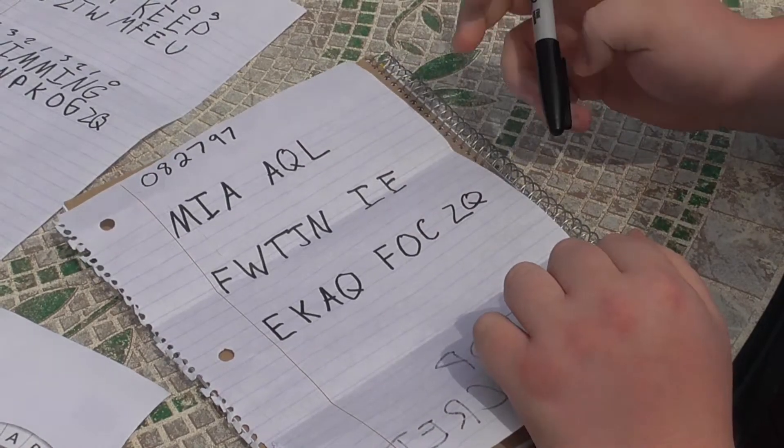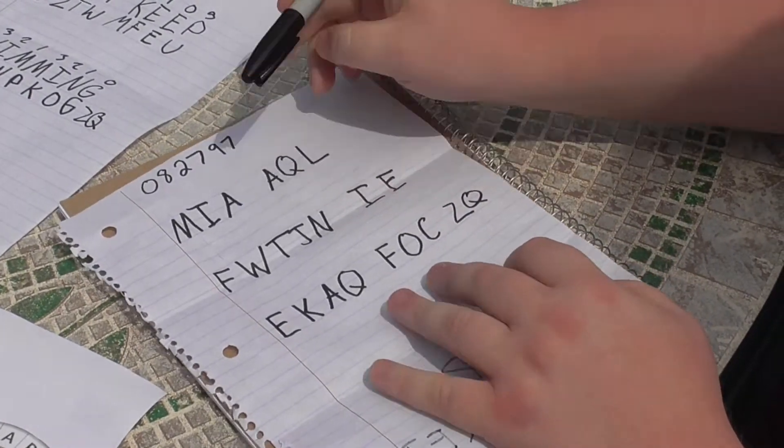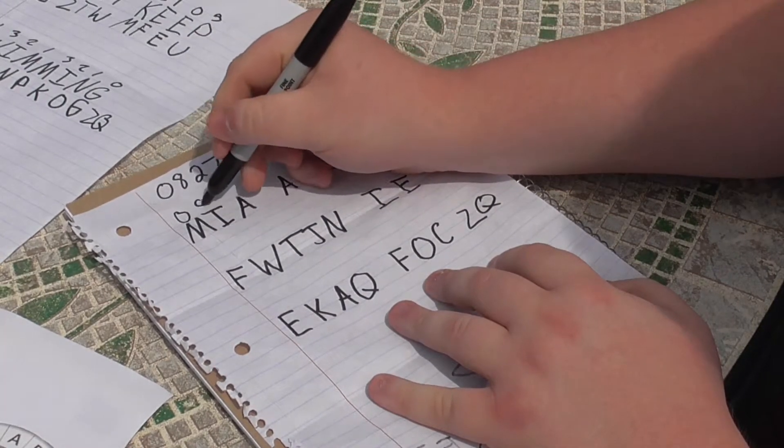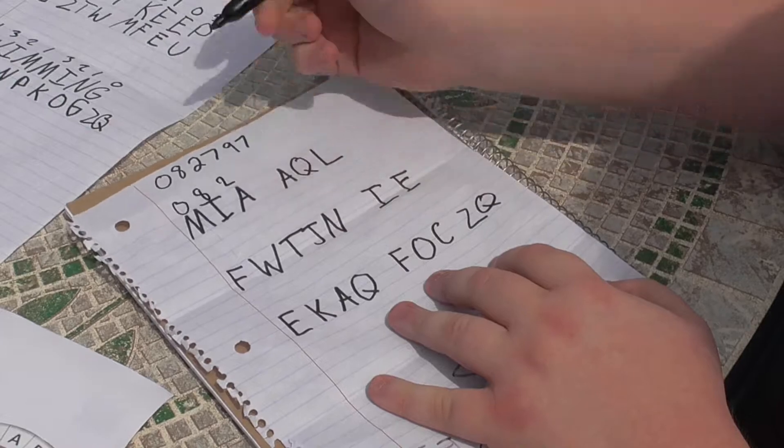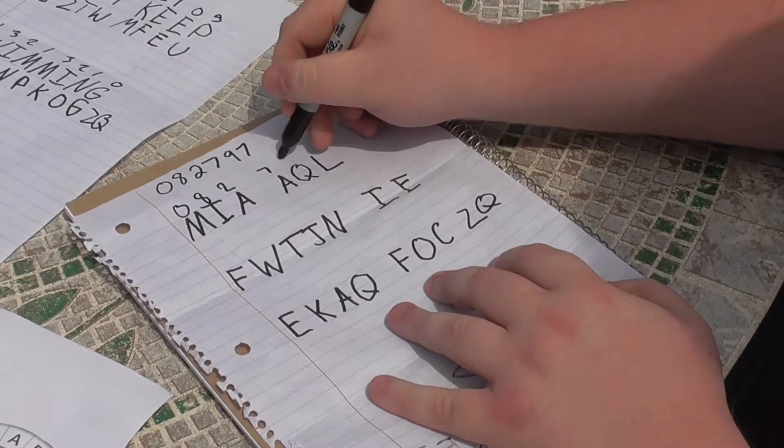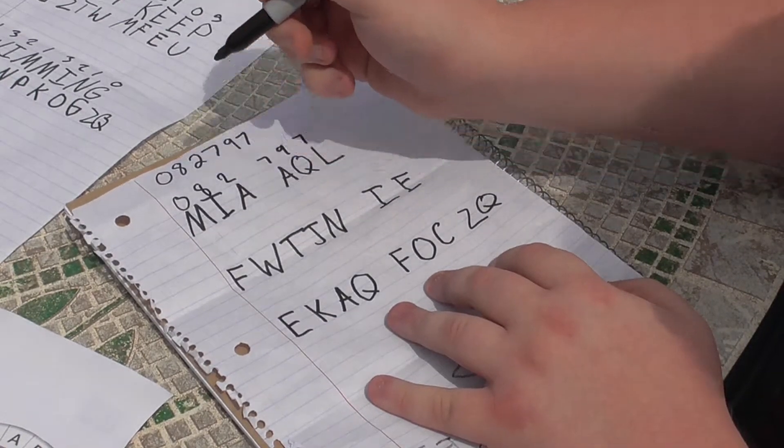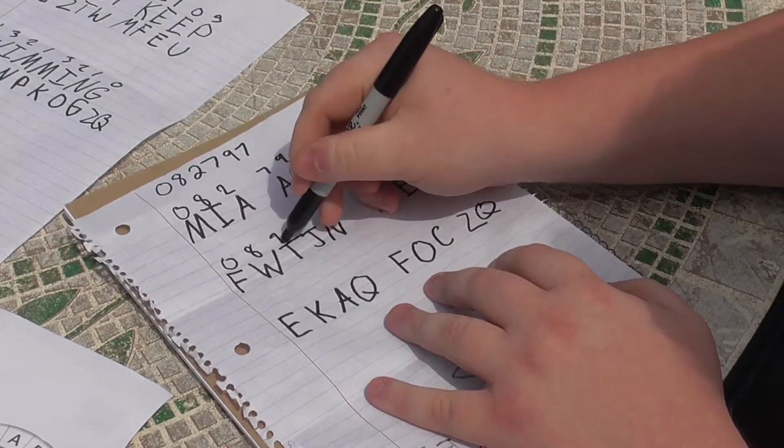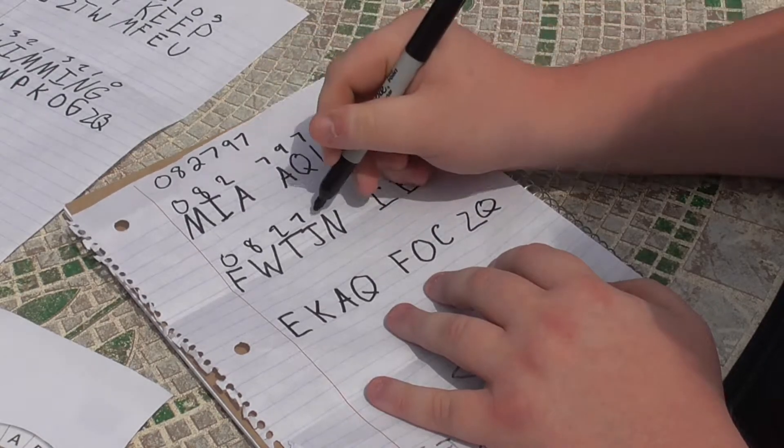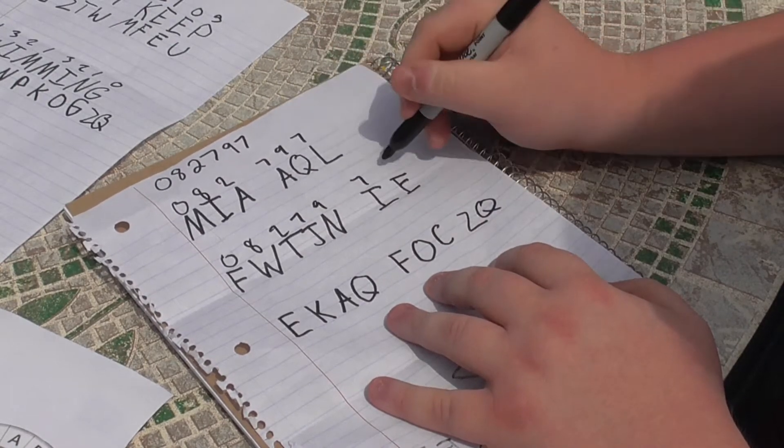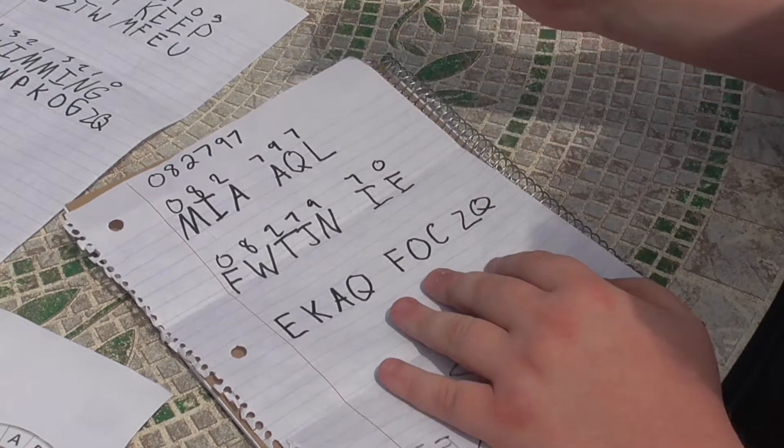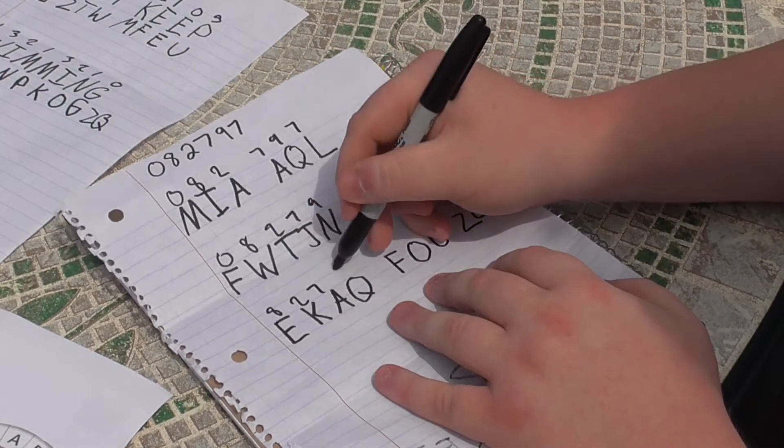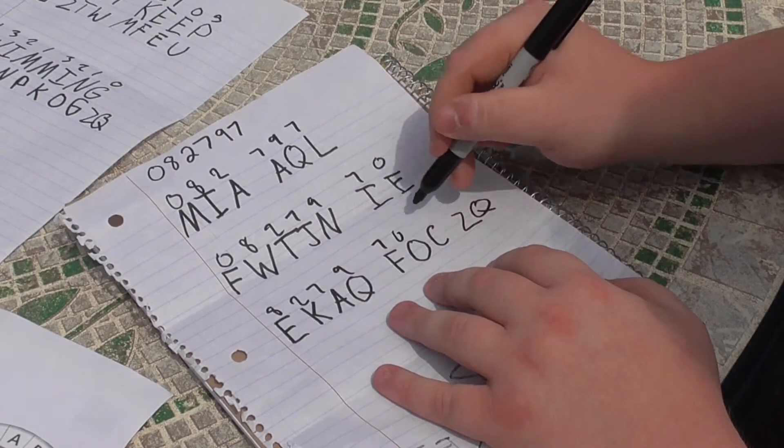So now I'm gonna write the numbers over top each letter: 2-7-9-7-0-8-2-7-9-7-0-8-2-9-0-8.